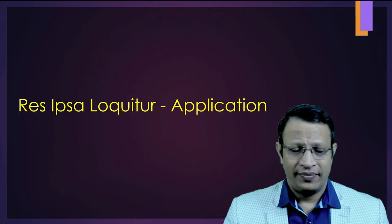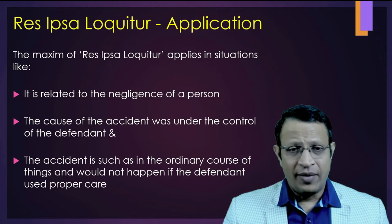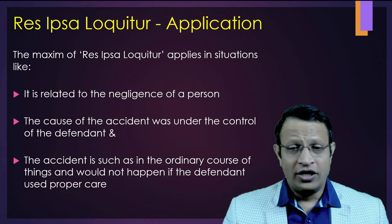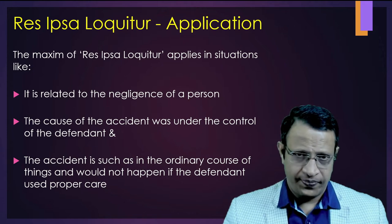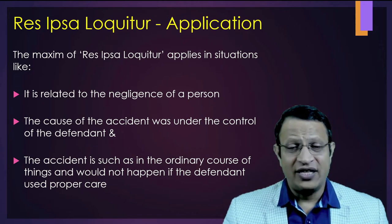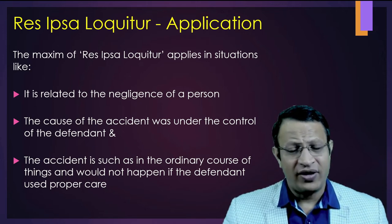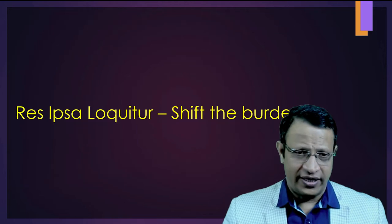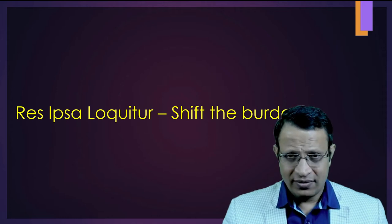The maxim of Res Ipsa Loquitur applies in situations related to negligence of a person — meaning it is invariably a civil case. The cause of the accident must have been under the direct control of the defendant. The accident must be such that in the ordinary course of events it would not have happened if the defendant had used proper care. That means the course of action is directly under the control of the defendant.